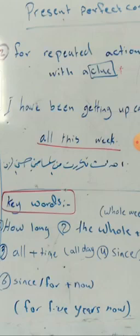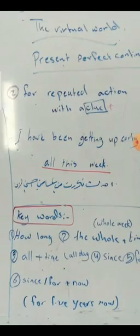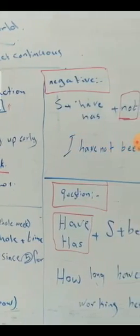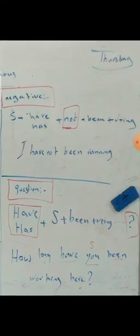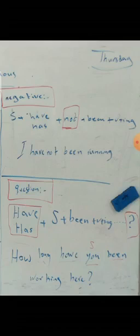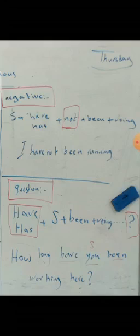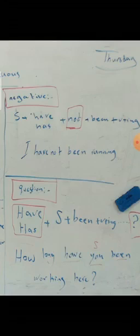Now the negative form: subject + have or has + not + been + verb-ing. We always add 'not' after the helping verb — 'have' for plural, 'has' for singular. Example: 'I have not been running' — meaning I have not been running.